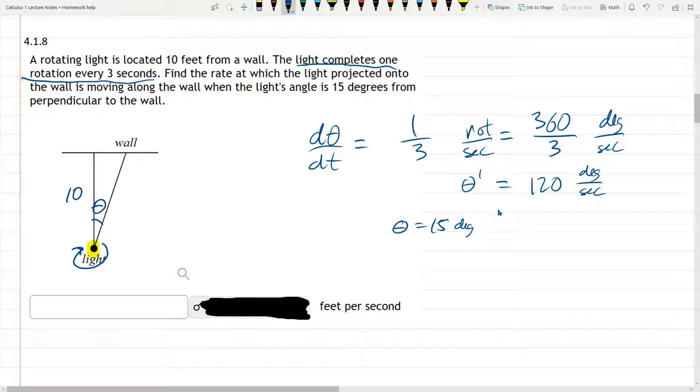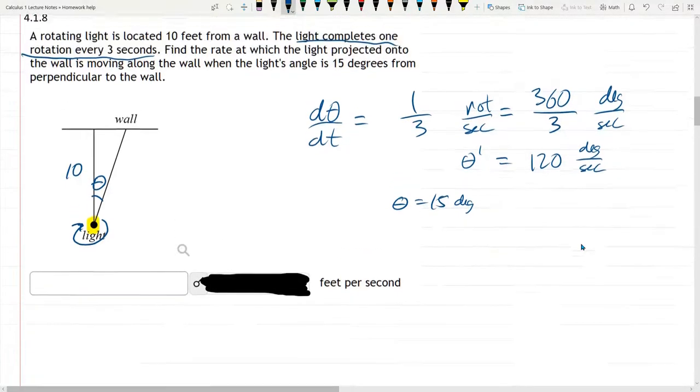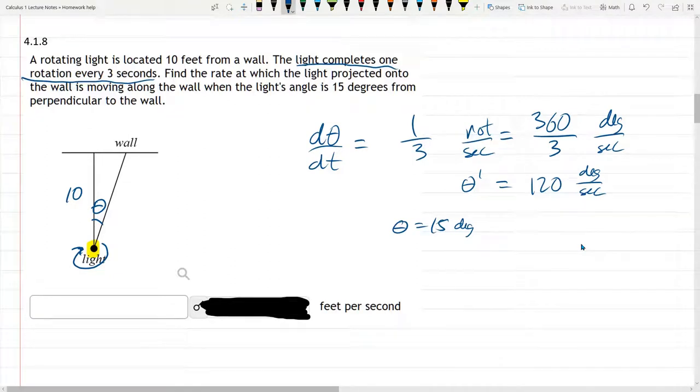If I'm going to use DEG for degrees, I should be consistent and use that everywhere I'm using degrees. We need to relate theta and the, we need to find the rate at which the light projected onto the wall. So here's the point where it's projected onto the wall. If the light's rotating the way that I described it earlier, this point where it's hitting the wall is going to move to the right.